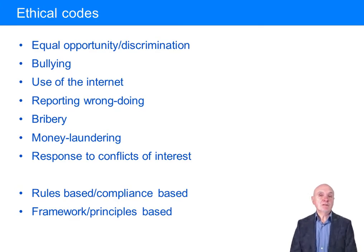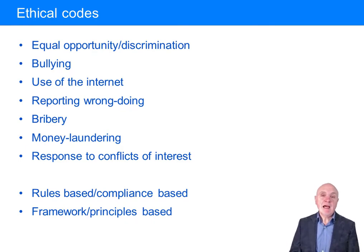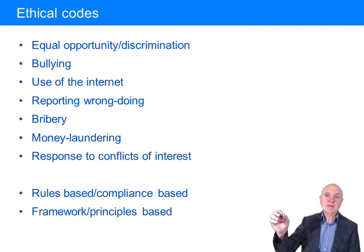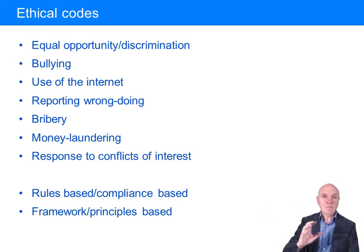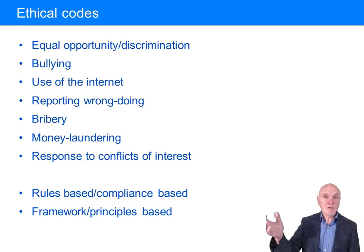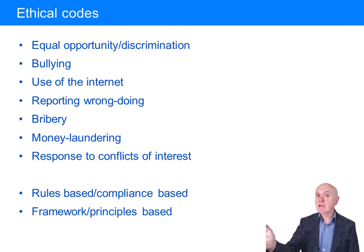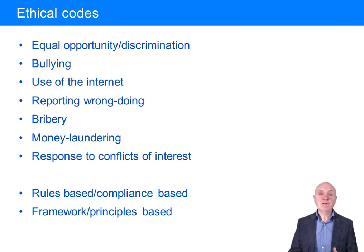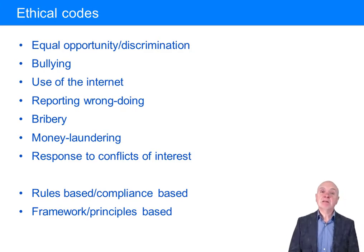What about conflicts of interest? If you are the purchasing officer of a company and your brother owns a potential supplier, you have a conflict of interest — you want your brother's company to do well, but it may not be the best supplier by quality or price. You certainly have to tell people about the conflict, and you may need to stand aside and let somebody independent decide on that purchase contract.